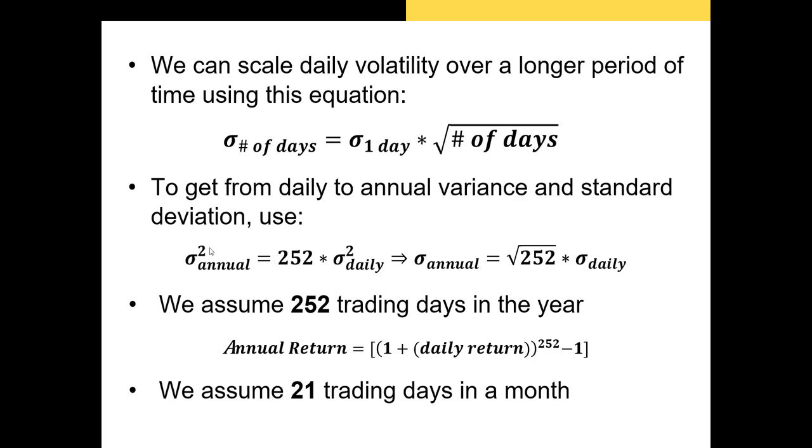if we wanted to scale up from a daily volatility number to an annual volatility number, we're scaling that by the square root of the number of trading days in a year. One thing I should point out is why we're using 252 instead of 365. To get from daily volatility to annual volatility, we're multiplying our daily volatility by the square root of 252, not 365.